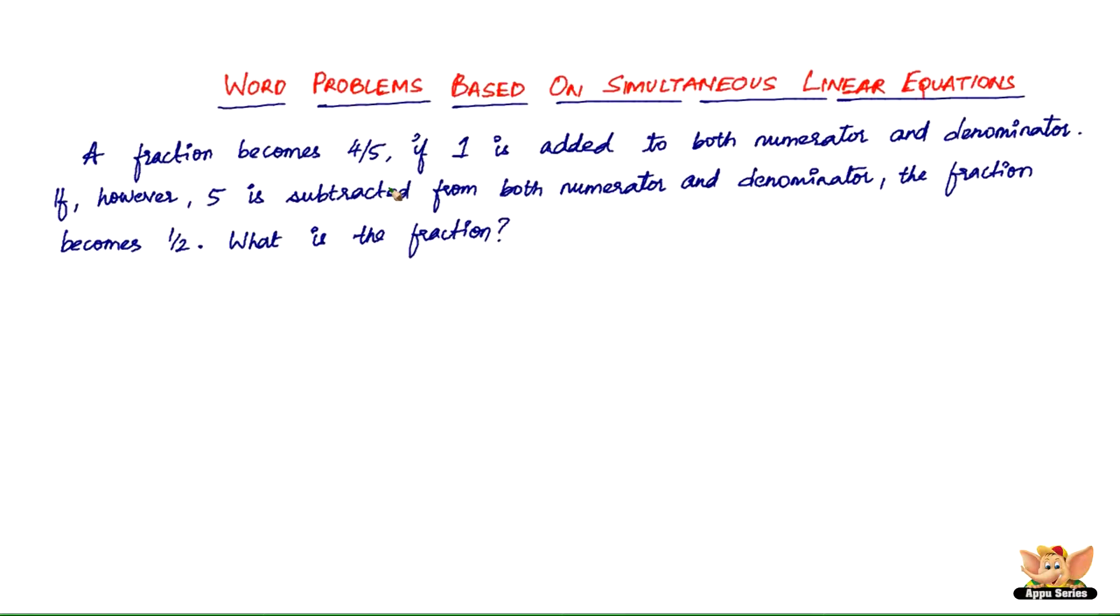Well, what is the mysterious thing that we are talking about here? It's definitely the numerator and the denominator, which makes a fraction. So let us give the numerator and the denominator some identity like x, y or whatever that is. That is the first step to solving word problems based on simultaneous linear equations.